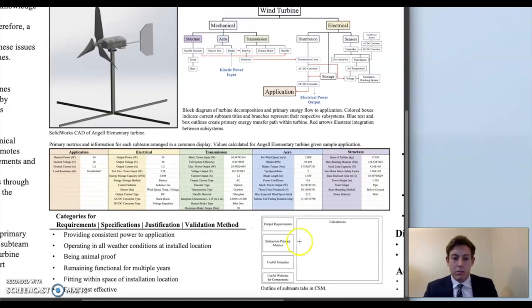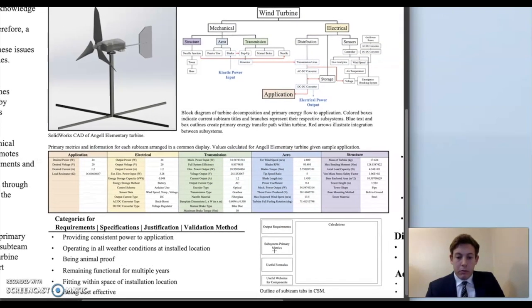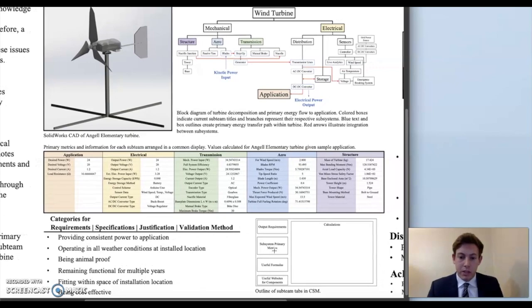Each subsystem tab is outlined in this manner with the power requirements displayed in this section here on the top left. For example, the output requirement for the electrical subsystem would be the desired power for the application, and the output for the transmission system would be the input power needed for the electrical system, and so on and so forth. The primary metrics are the metrics displayed here. I added useful formulas and websites for components to be purchased just because that's nice information to have.